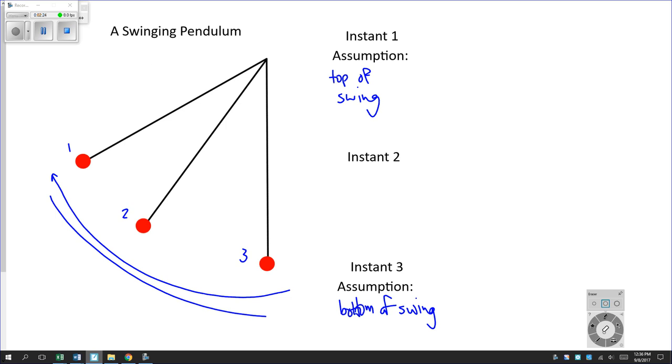So what can we surmise about energies at different instants? Well, instant 1, top of the swing. That actually tells us something else about what's happening. If we just say top of the swing, that means max height, maximum height.